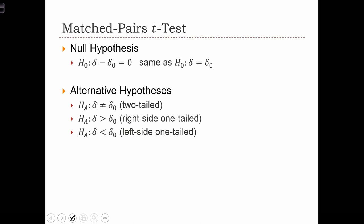In the matched-pairs test, we have a null hypothesis that the population difference of means equals some value. As I said, this is often zero, so we often assume there's no difference between the two variables. The alternative hypothesis is simply that there is a difference between the two variables.